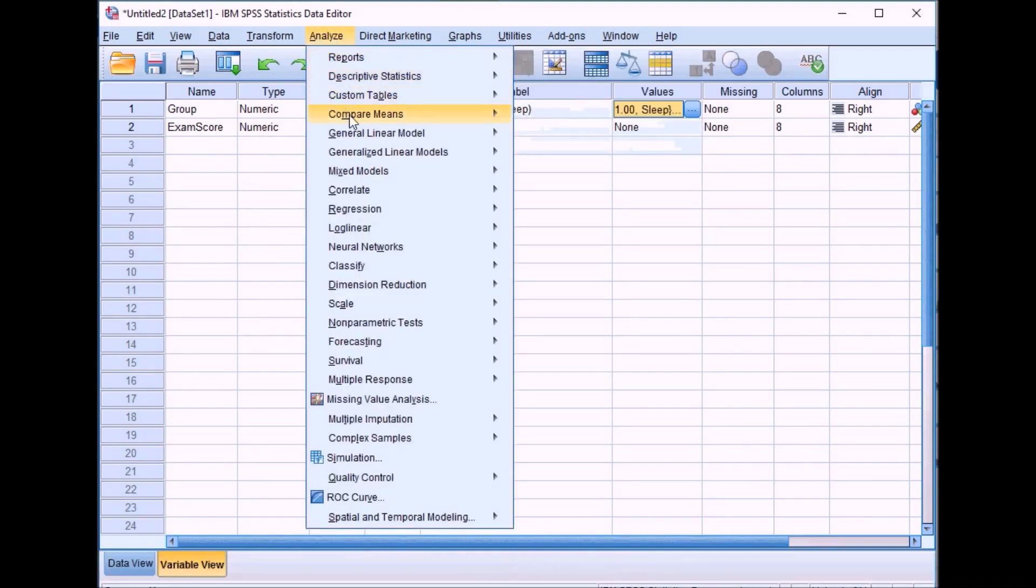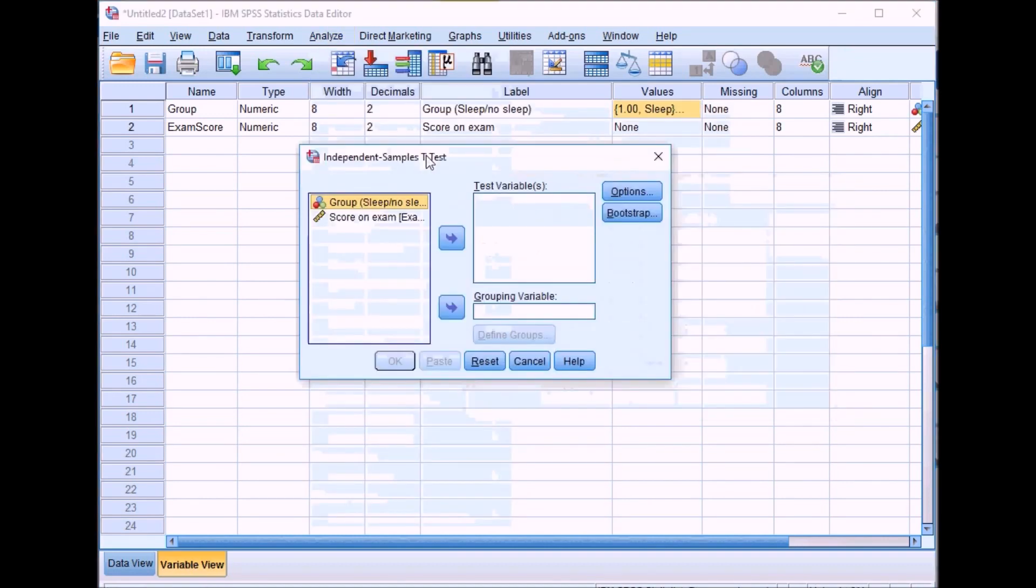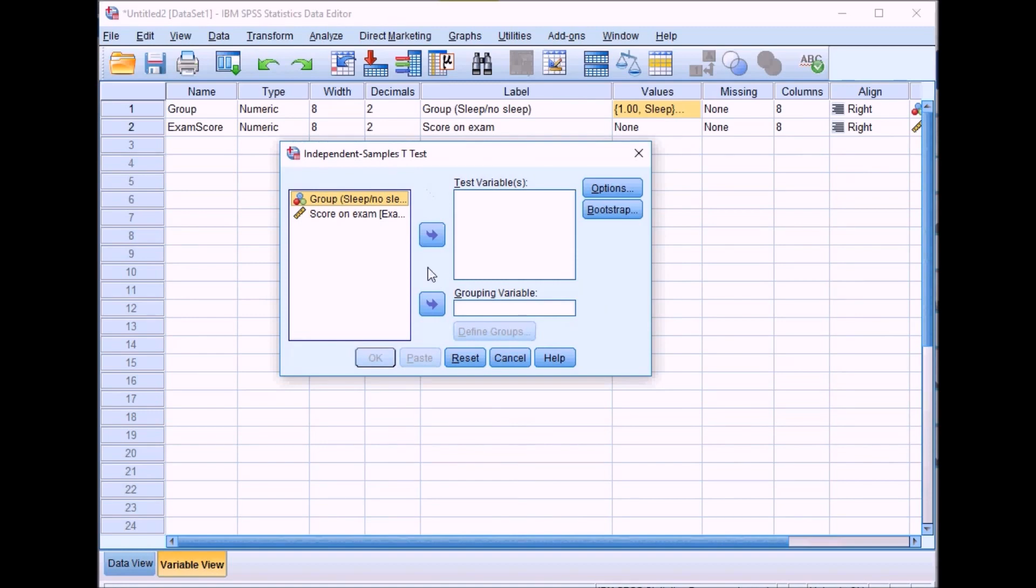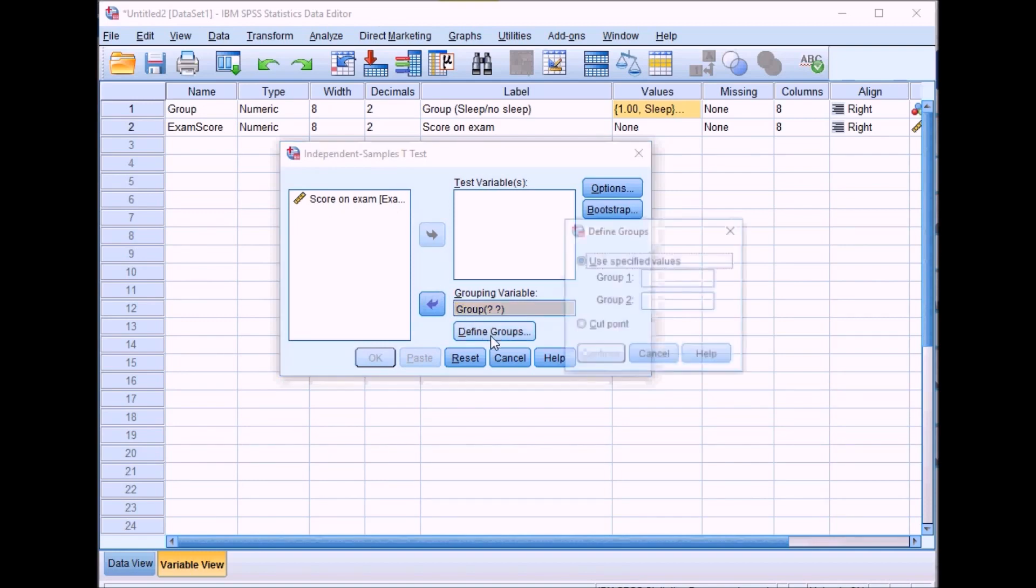If you go to Analyze, Compare Means, and then down to Independent Samples T-Test, it will bring up this box. For a t-test there are very few options to select. Everything that you need is selected by default. All you need to do is put your group variable or independent variable into this box, and then what you need to do in a t-test is click on this box, Define Groups. This is just defining the groups based on the codes you've used in the dataset. Here we said group one was sleep and group two was no sleep, so you just need to tell SPSS that you've used the codes one and two.